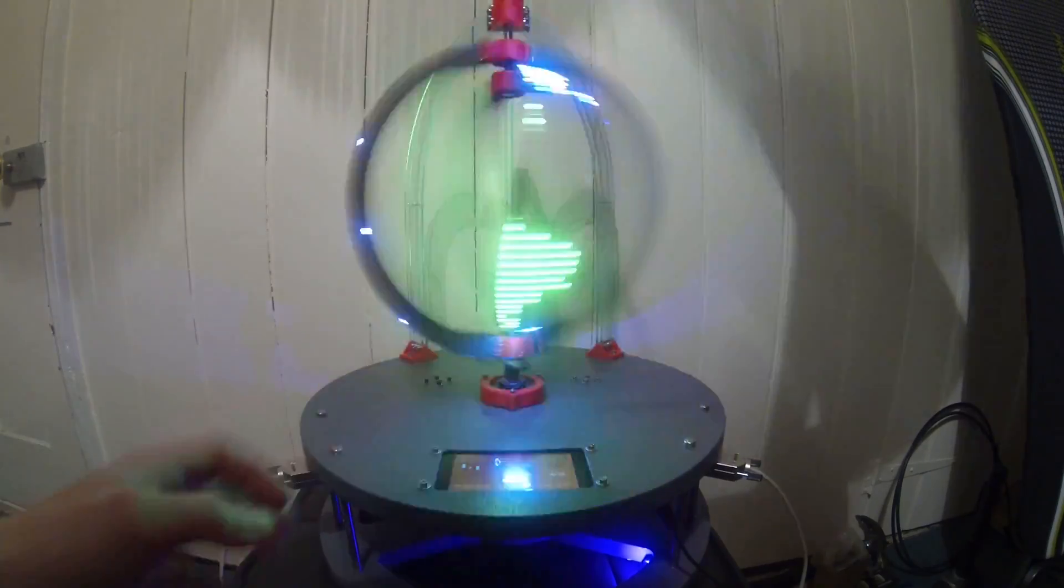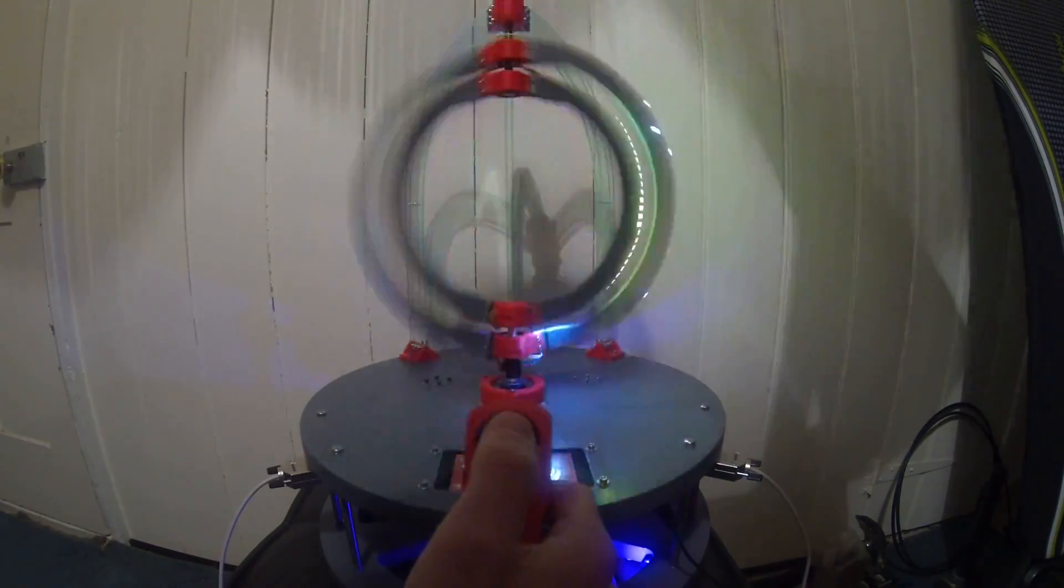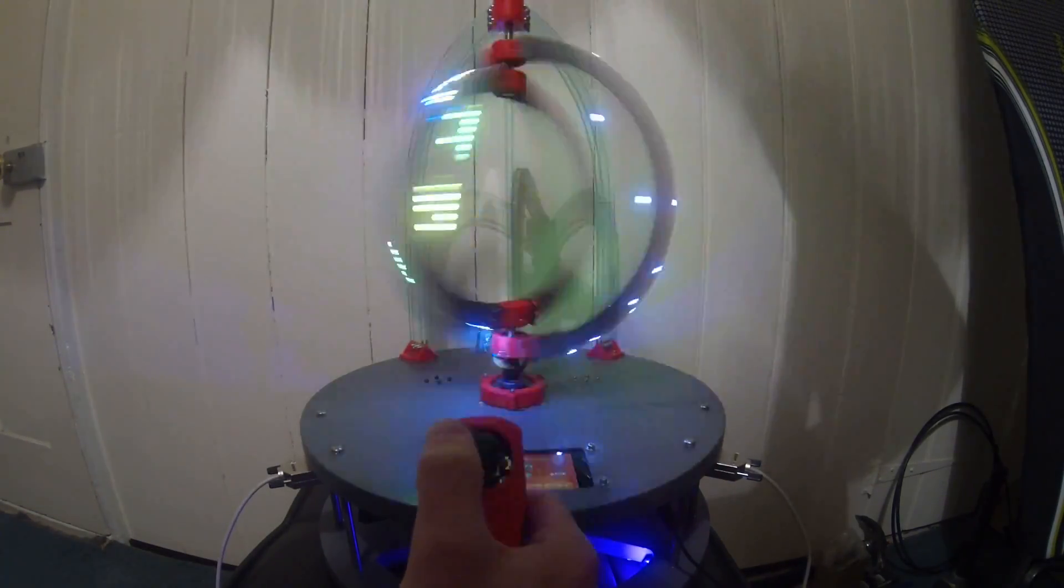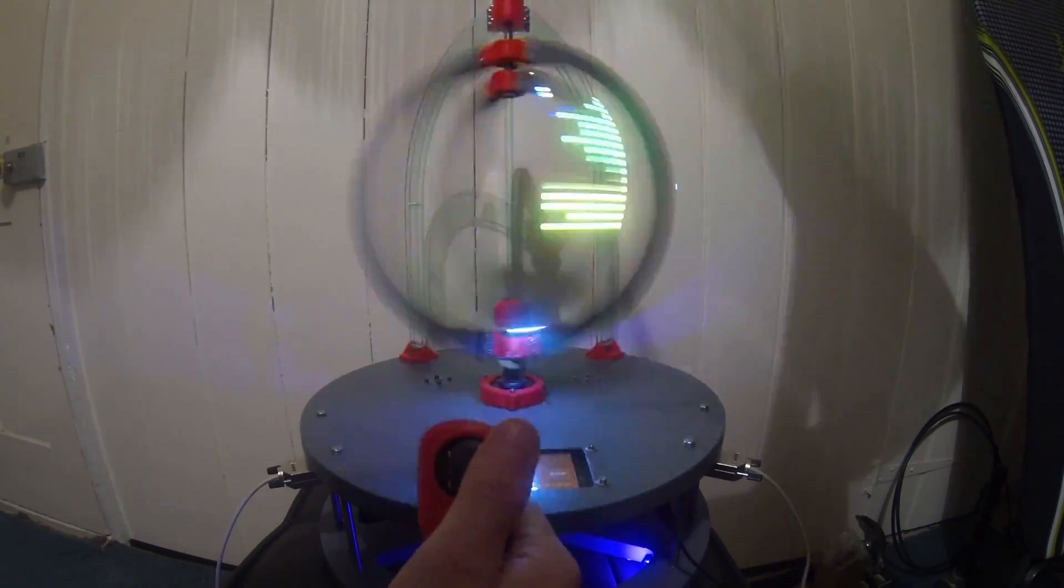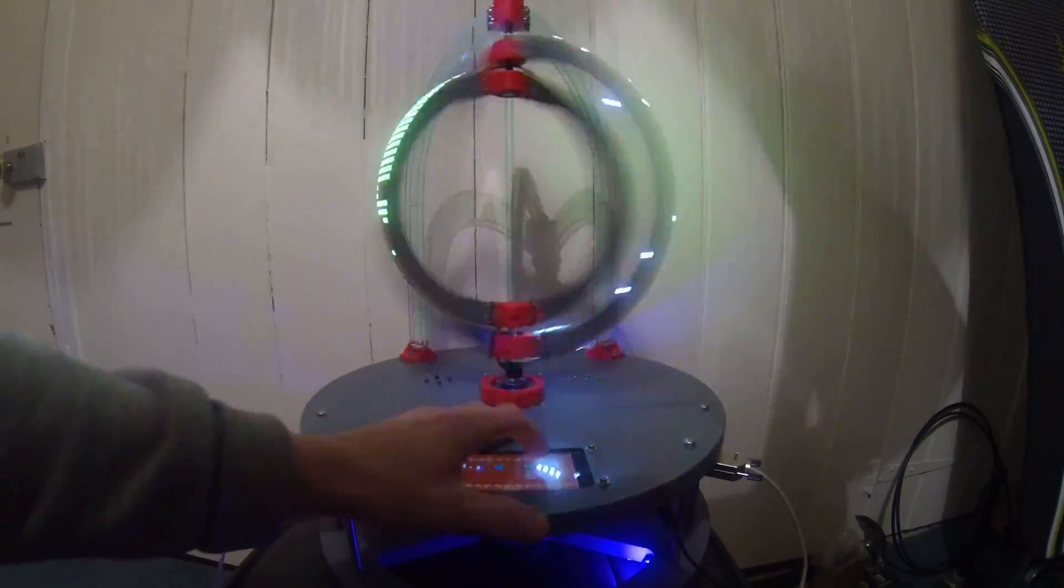Next we have the globe, and again with the joysticks we are able to rotate the globe around. Again, Christmas themed, snowing on the outside, then once we are done we can power it down.